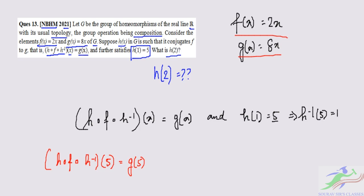From here we can write the composite function as h(f(h⁻¹(5))). So h⁻¹(5) is 1, and g(5) is given as 8×5. So g(5) is nothing but 8×5 that is 40.